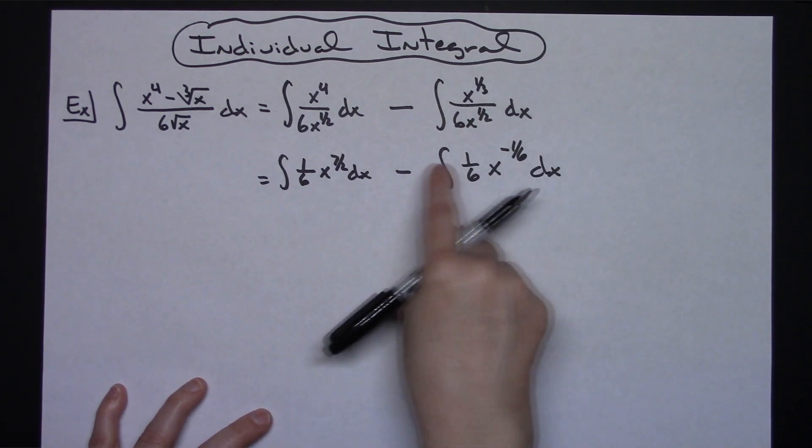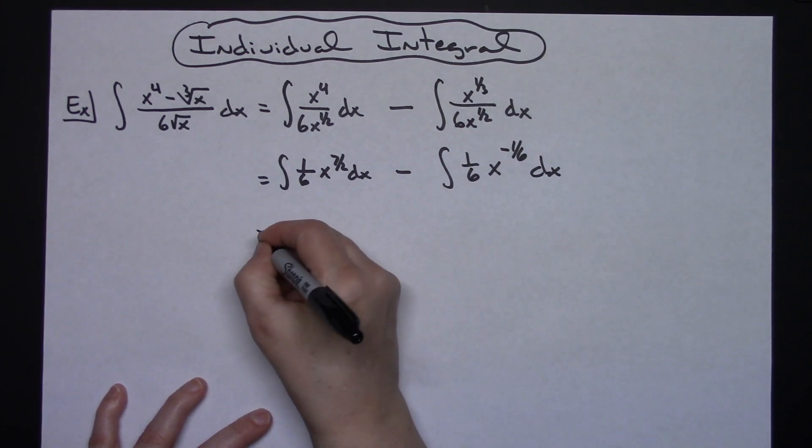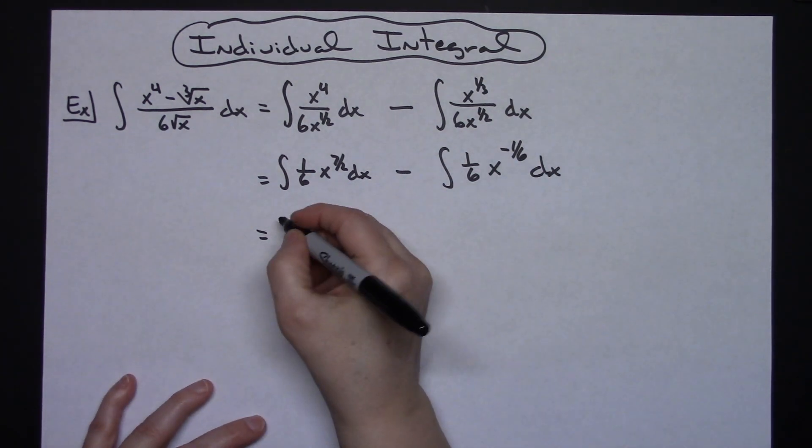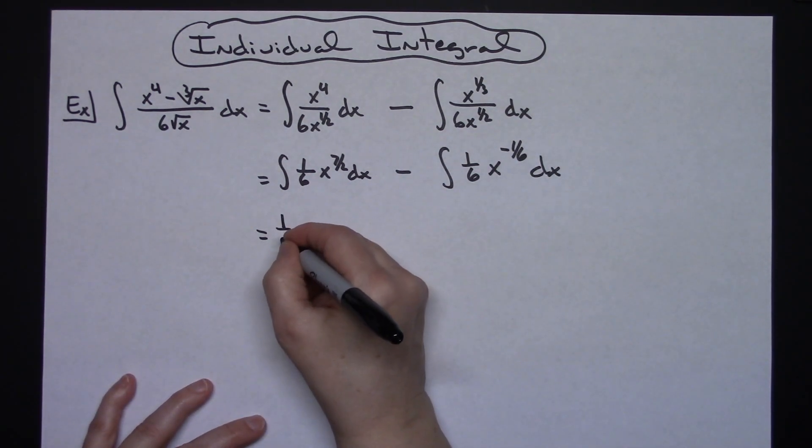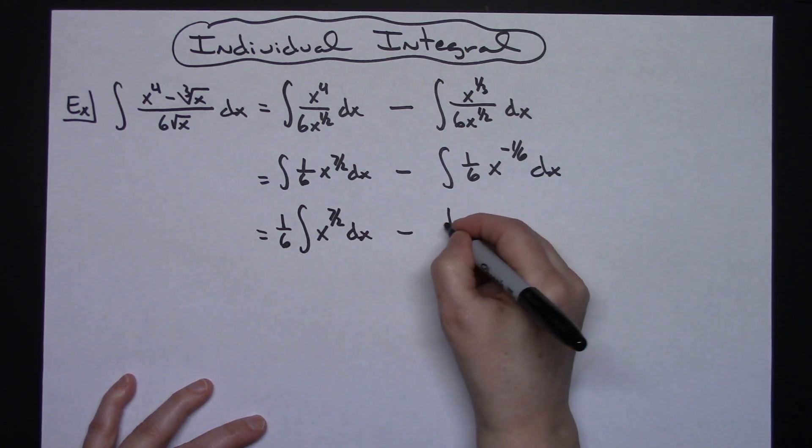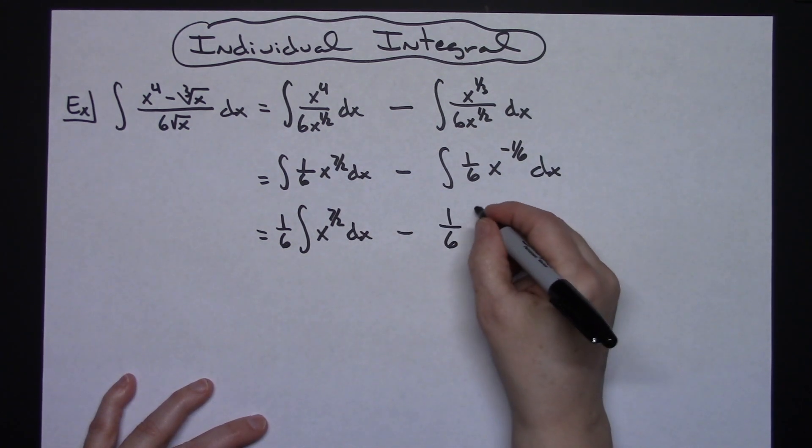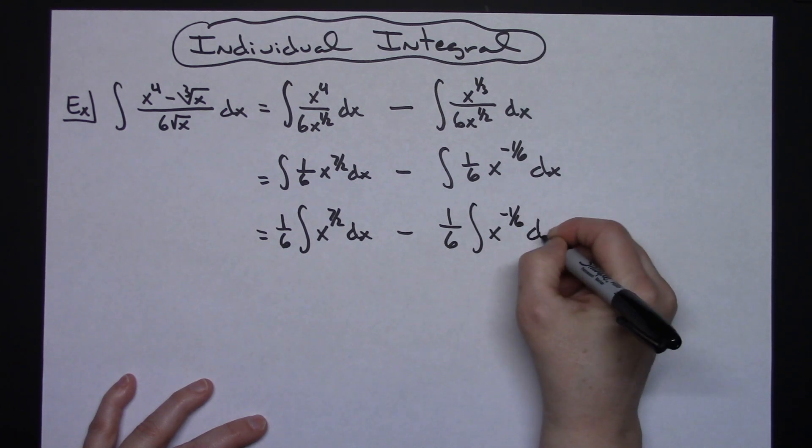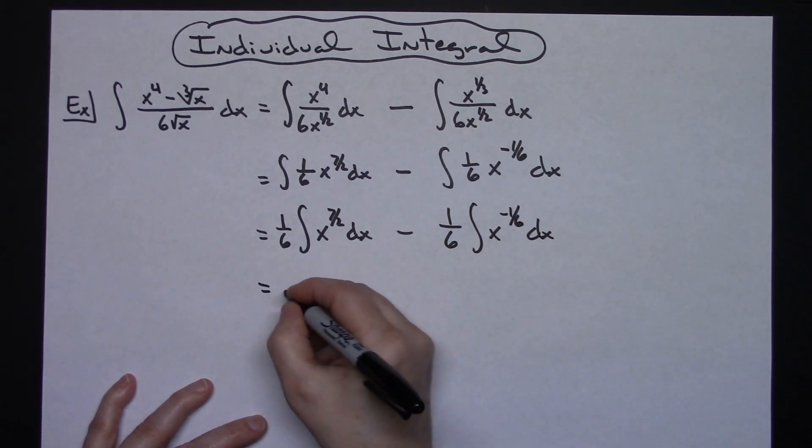We can pull the one-sixth out of both of these and integrate because I'm just going to have x to the seven-halves and x to the negative one-sixth. Let's show that step of pulling out that one-sixth: one-sixth integral of x to the seven-halves dx minus one-sixth integral of x raised to the negative one-sixth dx. Now it's time that we actually start to integrate here.